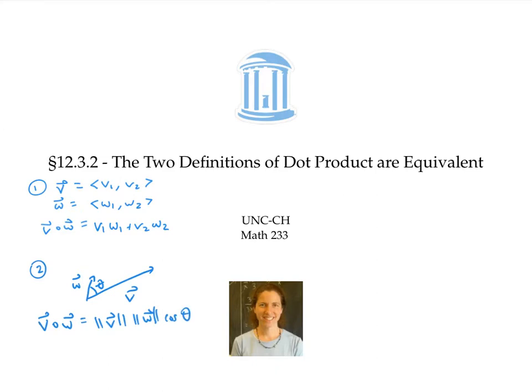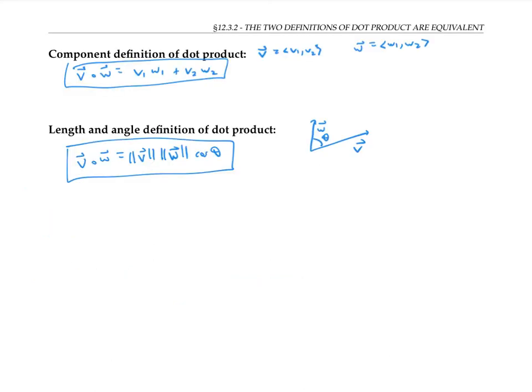In this video, I'll use the law of cosines to show that these two definitions always give the same answer. I've written down the two definitions of dot product for reference. I'm going to assume the component definition of dot product, and prove that the other formula for dot product will hold.